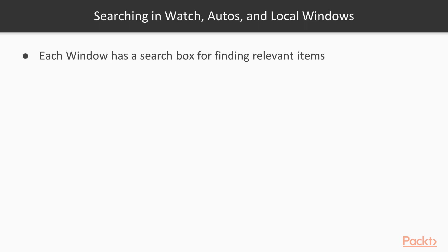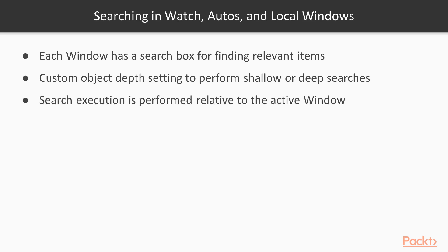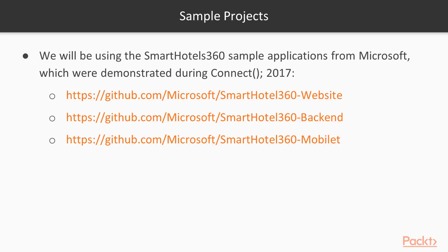When searching in the Watch, Autos, and Local windows, each window is going to have a search box for finding relevant items. You can specify a custom object depth, whether you're looking for shallow or deep searches, and search execution is performed relative to the active window. For the purpose of this exercise, we're going to be using the Smart Hotels 360 sample applications that were demoed during Microsoft Connect in 2017.